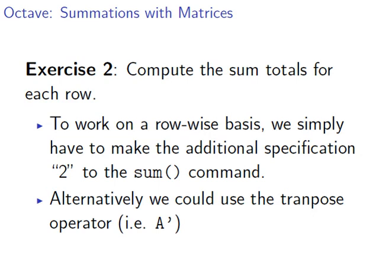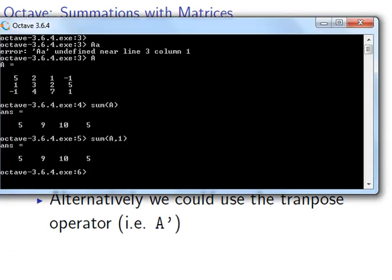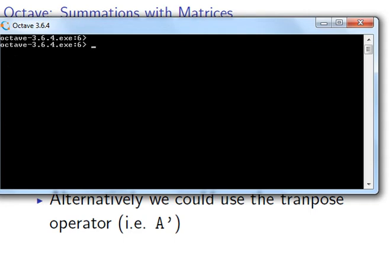Let's look at that now. We have A there, and what we're going to do is specify 2 as an additional argument to the command sum(). This tells Octave that we're working on a row-wise basis rather than column-wise basis.